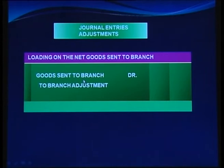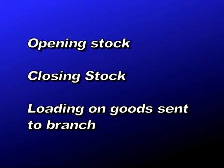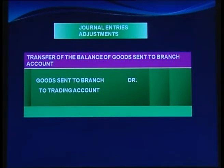For loading on net goods sent to branch: Goods Sent to Branch debit to Branch Adjustment, to segregate the profit element above cost in goods sent at invoice price. In branch adjustment we thus have three types of loading: on opening stock, closing stock, and goods sent to branch. The balance of goods sent to branch account is then transferred to trading account: Goods Sent to Branch debit to Trading Account.